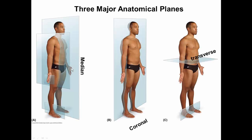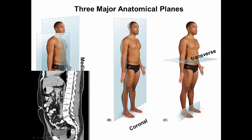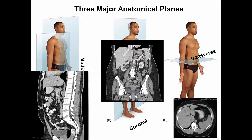There is a median plane — a vertical plane passing longitudinally through the body, splitting it into right and left equal halves. A sagittal plane is any plane parallel to the median plane but dividing the body into unequal halves. A coronal or frontal plane intersects the median plane at a right angle, separating the body into anterior and posterior parts. Finally, the transverse or axial plane is cut at a right angle to both the median and coronal planes, separating the body into upper and lower halves — a plane frequently seen in MRI and CT scans.